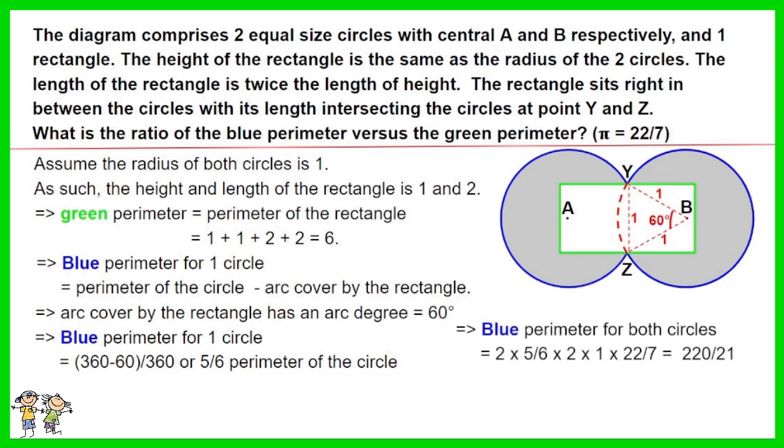Thus, the blue perimeter for both circles equals 2 times 5 over 6 times 2 times radius which is 1 and time pi which is 22 over 7. The result is 220 over 21.